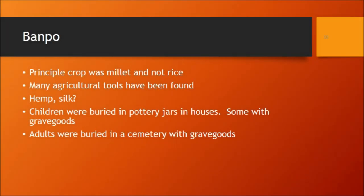Now some information about Banpo. Looking at the differences between Banpo and Jiahu, you find that the principal crop was millet — another type of grain that was wild and then domesticated. You don't find too much rice here. You do find agricultural tools, so we are in the Neolithic and people are farming. Another interesting part of this site is the use of silk — very early on the Chinese are developing silk, which becomes much more important later on.